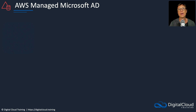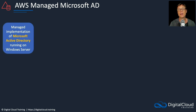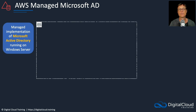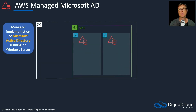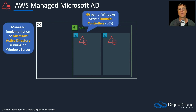First, we have the AWS Managed Microsoft AD. This is a managed implementation of Microsoft Active Directory that runs on Windows servers in the AWS data center. Within our VPC in the AWS cloud, we can deploy a pair of highly available Windows Server domain controllers. This is a managed service, so it's all done for you — you just create your directory service in the console and it will deploy these domain controllers into multiple subnets.